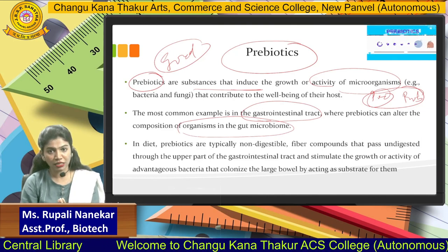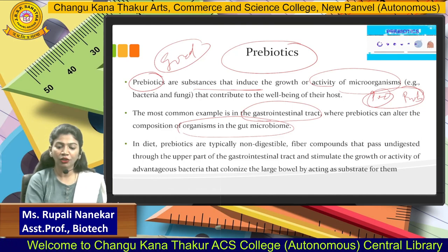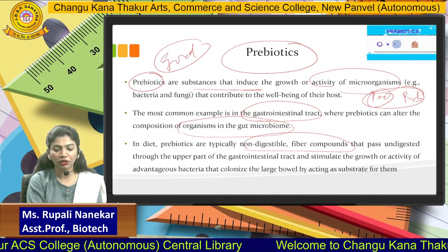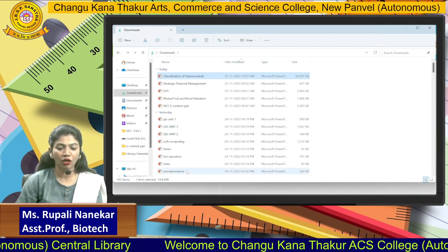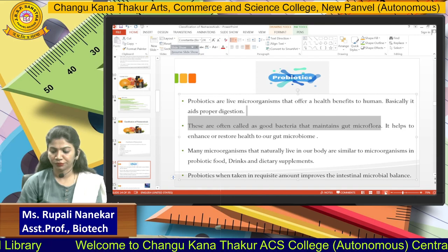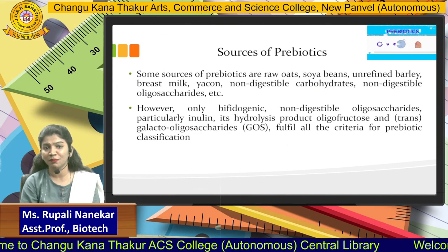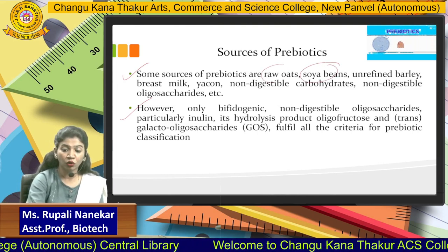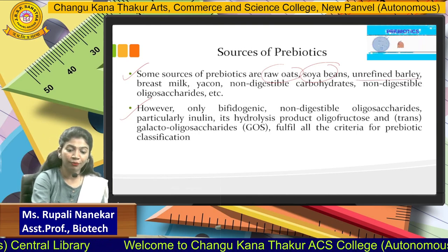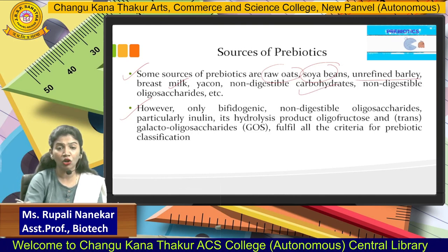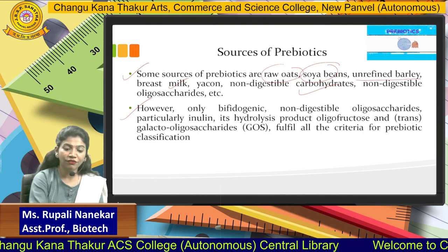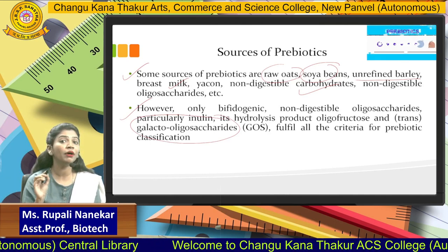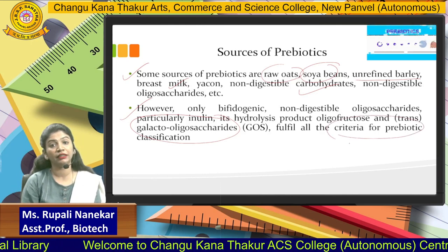Prebiotics help maintain gut health. They are typically non-digestible fibrous compounds that pass undigested through the upper part of your body and then colonize in the bowel area. Prebiotic sources include the non-digestible part of foods: soya bean, raw oats, unrefined barley, milk, breast milk given to children, non-digestible carbohydrates, and galacto-oligosaccharides. These are sources of prebiotics for maintaining your gut health and fulfilling the criteria for classification of prebiotics.